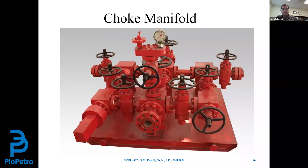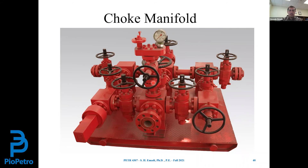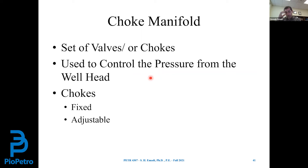The choke manifold consists of some gauges, valves, and different flow paths. When fluid comes out of the wellbore — whether drilling mud or formation fluid — it enters the choke manifold and we have different paths in case of any leak, plus different valves and chokes. We use this equipment to control pressure from the wellhead, and it has fixed chokes of different sizes.